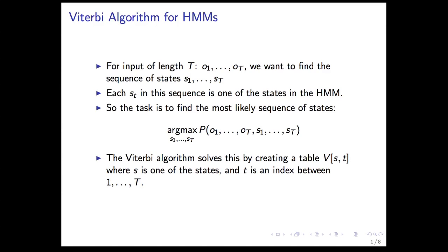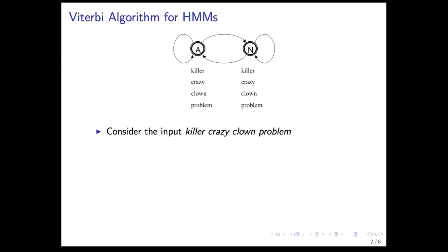For each state and each prefix of the input, we're going to find the most likely sequence of states — just like in edit distance, where we created a table that looked at prefixes, and sub-prefixes led to longer prefixes until we covered the whole input. In this case we're doing exactly the same thing. Let's take the input: killer, crazy, clown, problem. If you just enumerate all of them, you get 2 to the 4 possible state sequences. We want to do better than that.